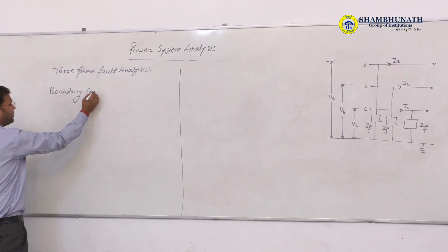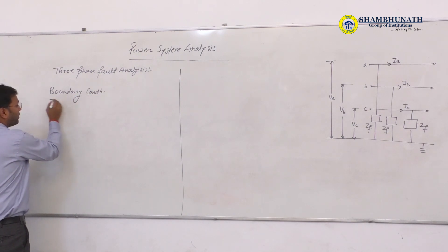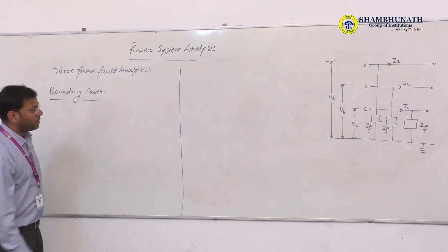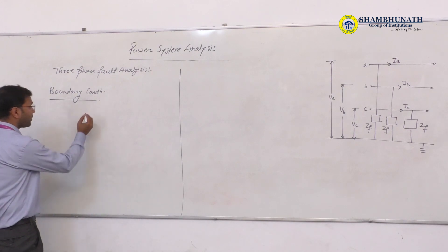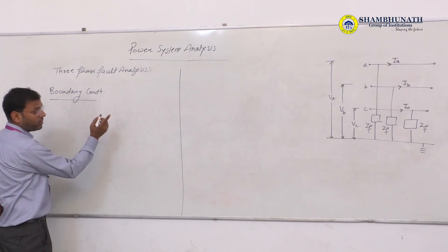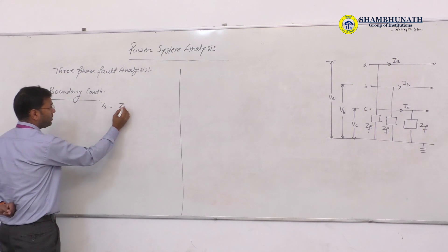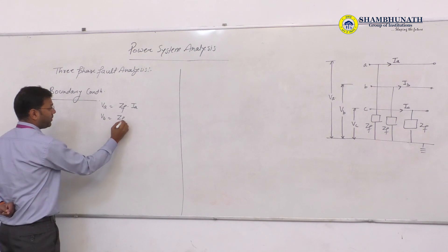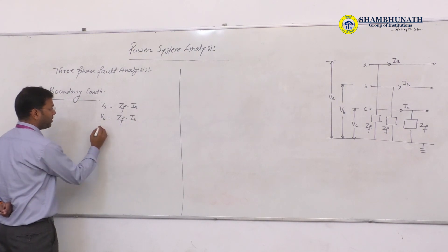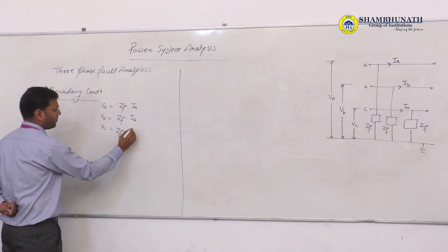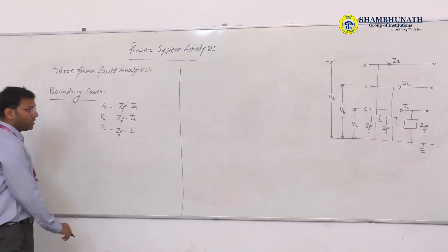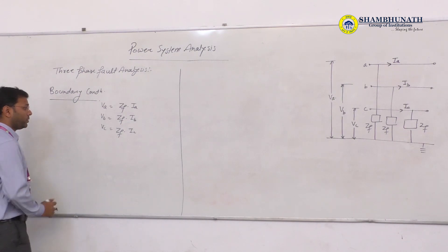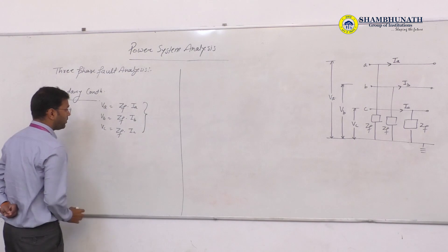Boundary conditions: The boundary conditions of 3-phase fault analysis. We see that in terms of voltage: VA equals ZF into IA, VB equals ZF into IB, and VC equals ZF into IC. And the current condition is IA plus IB plus IC equals zero. These are the boundary conditions in terms of voltage.